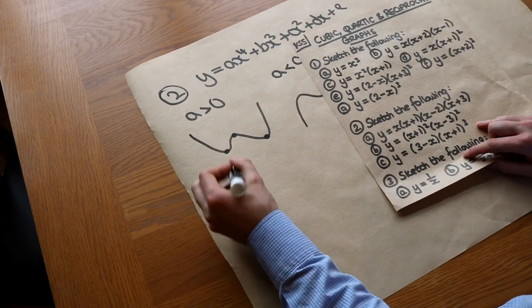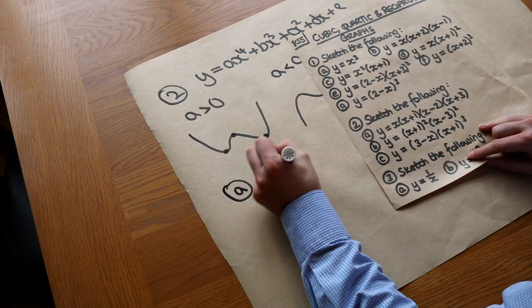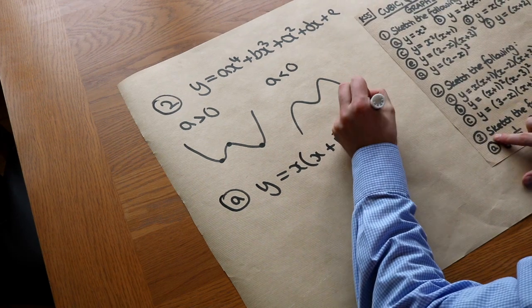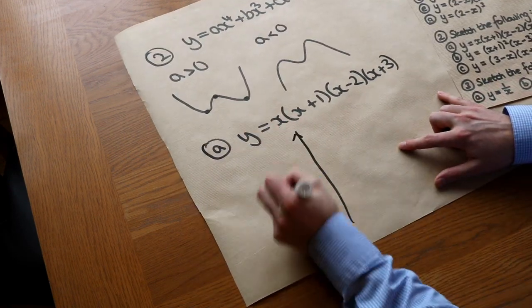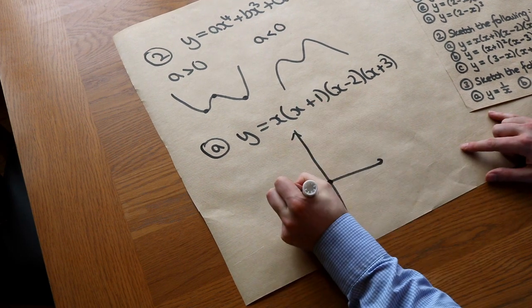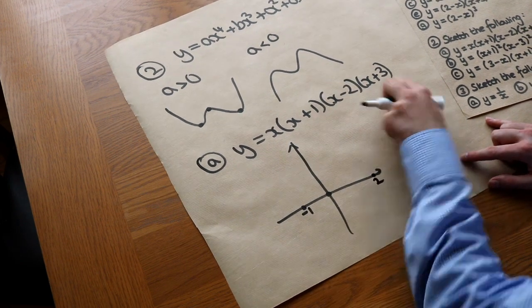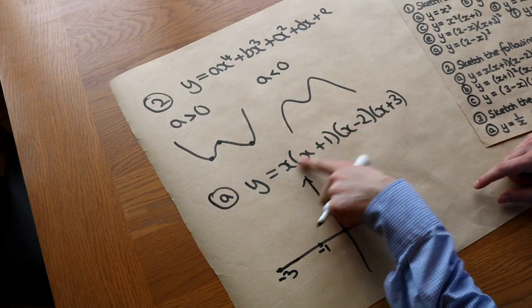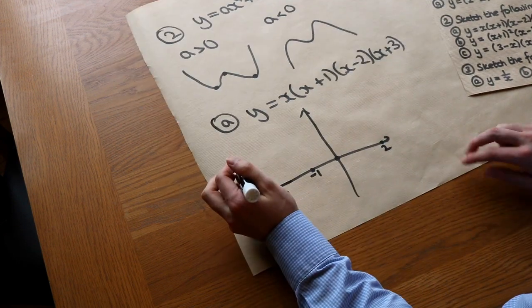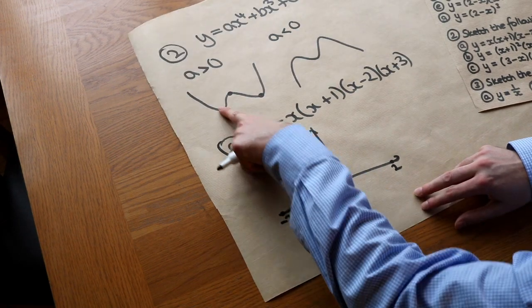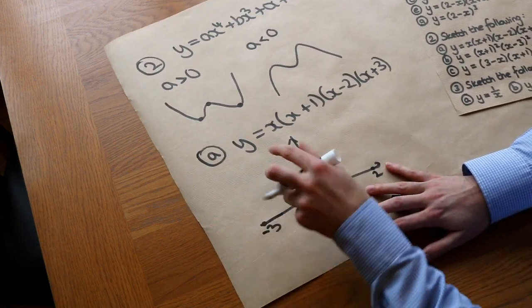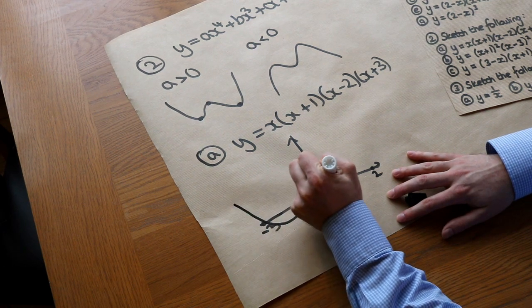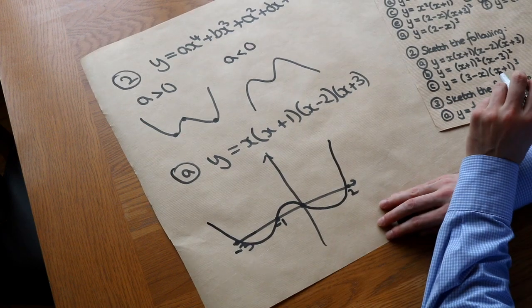The principles for sketching quartics are exactly the same as for cubics. For y equals x(x+1)(x-2)(x+3), we have roots at zero, minus 1, positive 2, and negative 3. It's a positive quartic because x times x times x times x gives positive x⁴. There are no repeated factors so the curve just crosses at each of the four roots — it comes down, crosses, crosses, crosses, and comes back up.